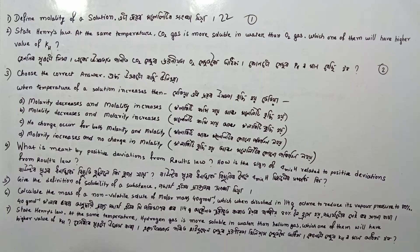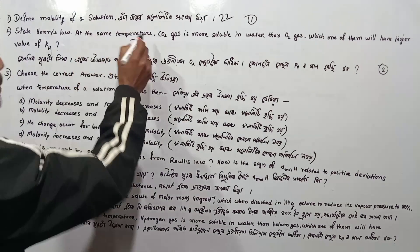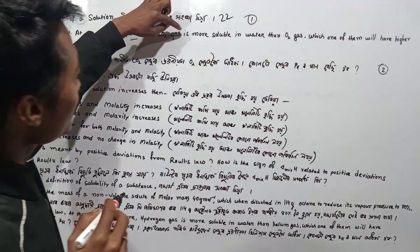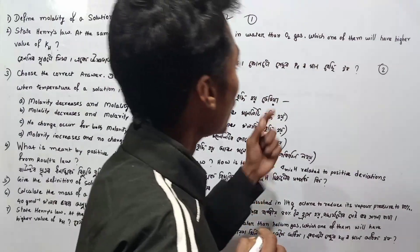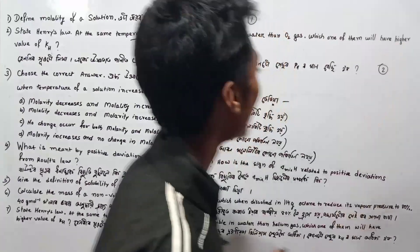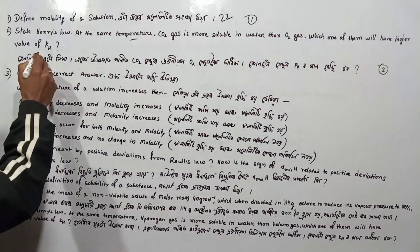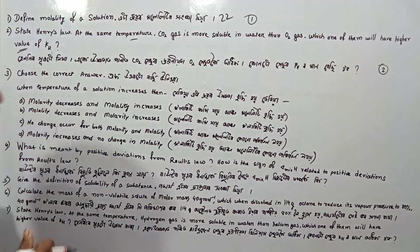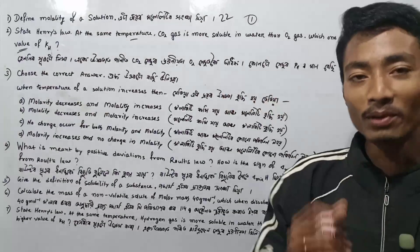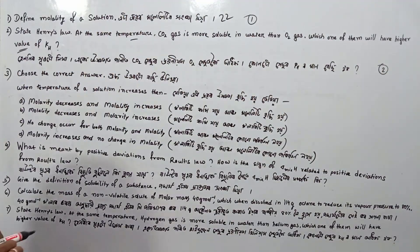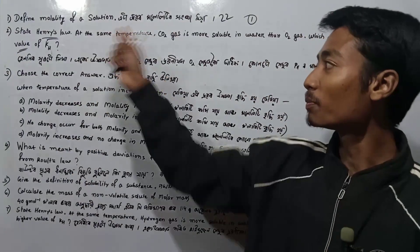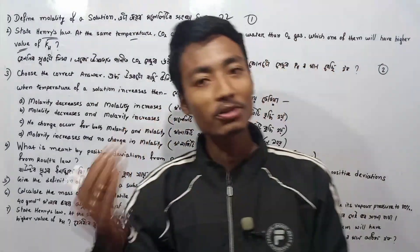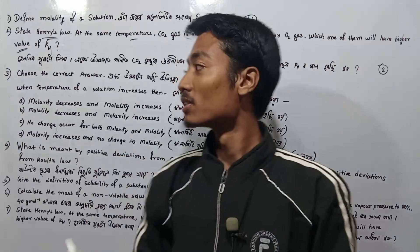Next question: Henry's law — at the same temperature, CO2 gas is more soluble in water than O2 gas. Which one of them will have a higher value of KH? I will repeat the same question.